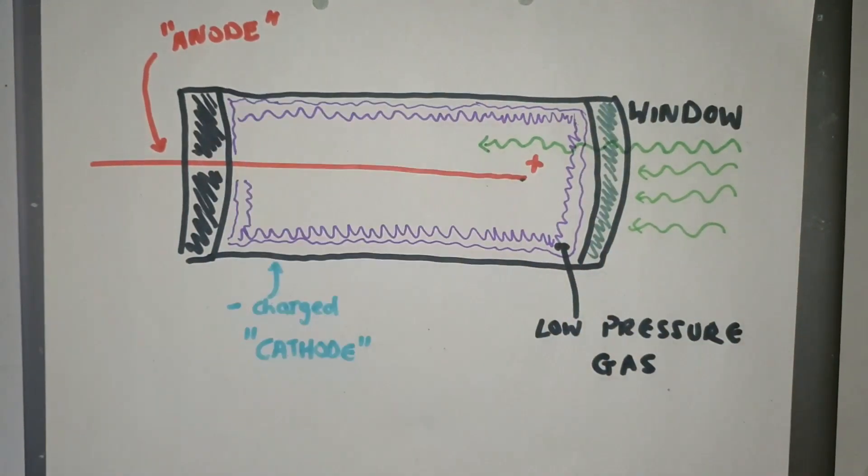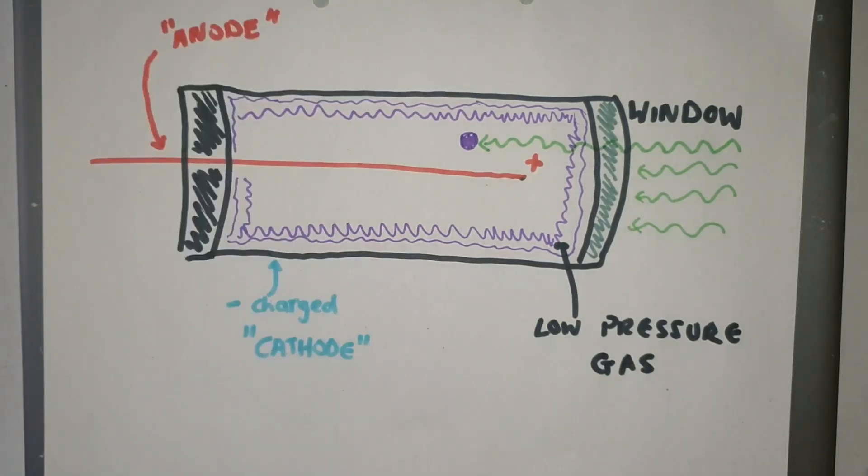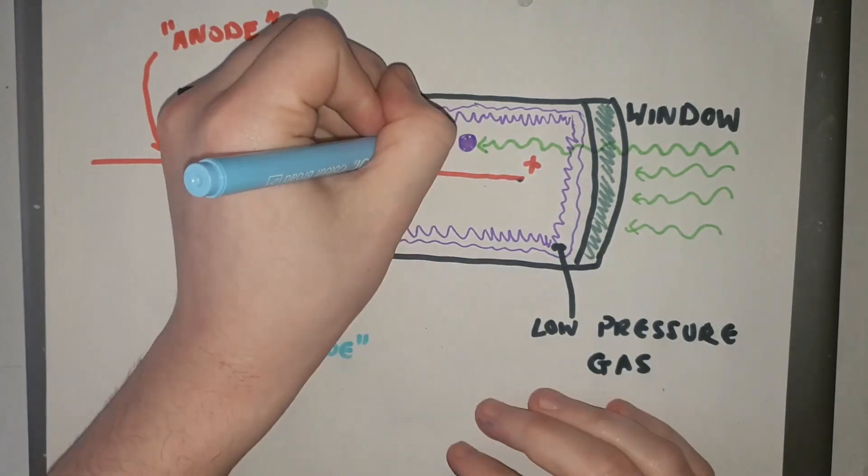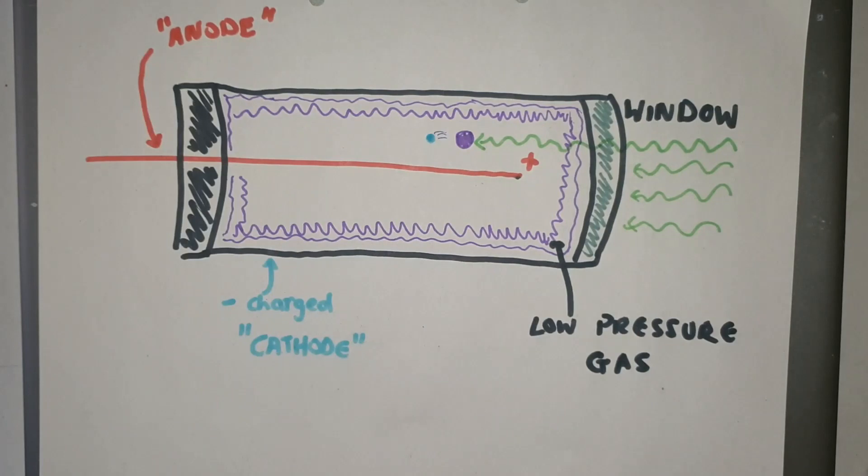So radiation will pass through the window of the tube and collide with one of the atoms of this low pressure gas. The radiation will transfer energy to the atom and this will ionize the atom. Remember it means it will lose an electron. This is covered in more detail in a previous video which I will link in the description.